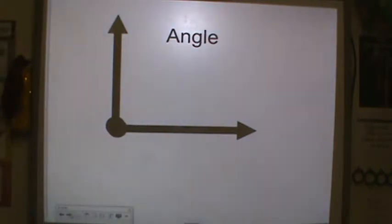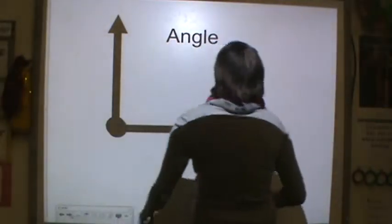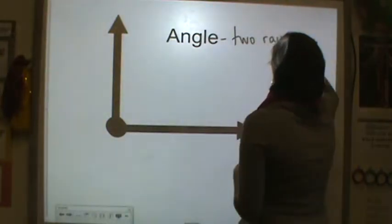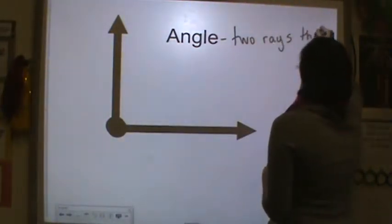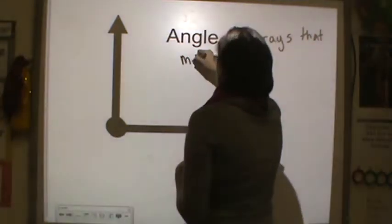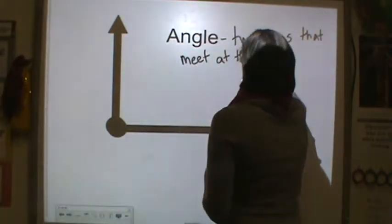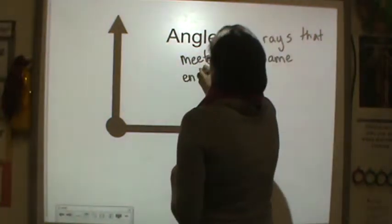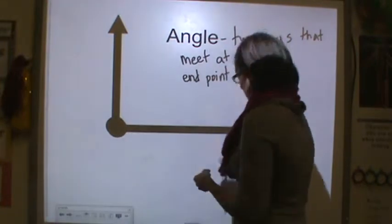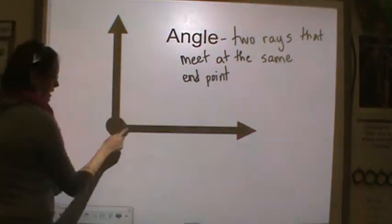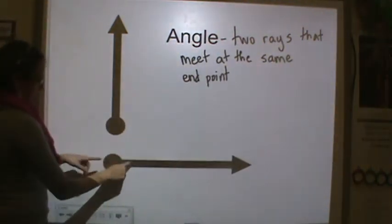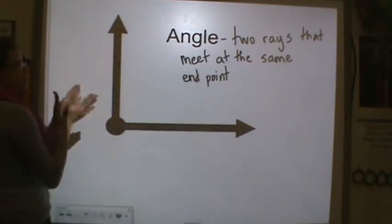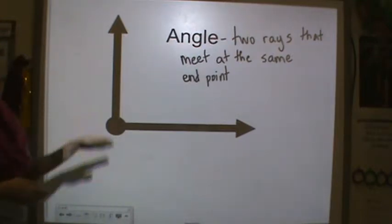An angle is two rays that meet at the same endpoint. You can see I have an endpoint here, and these endpoints are meeting. You have a ray and a ray, and these two rays together make an angle. There are many different types of angles.